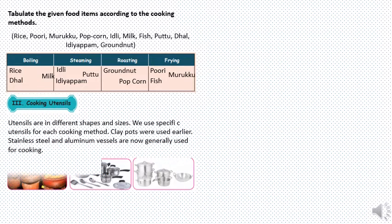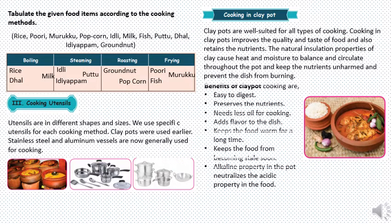Now we are going to talk about cooking utensils. Utensils come in different shapes and sizes, and we use specific utensils for each cooking method. We have clay pots which were used earlier. Nowadays we use stainless steel and aluminium vessels. Clay pots are well suited for all types of cooking. They improve the quality and taste of food, retain the nutrients, and the natural insulation properties of clay cause heat and moisture to balance and circulate throughout the pot, keeping nutrients unharmed and preventing the dish from burning.